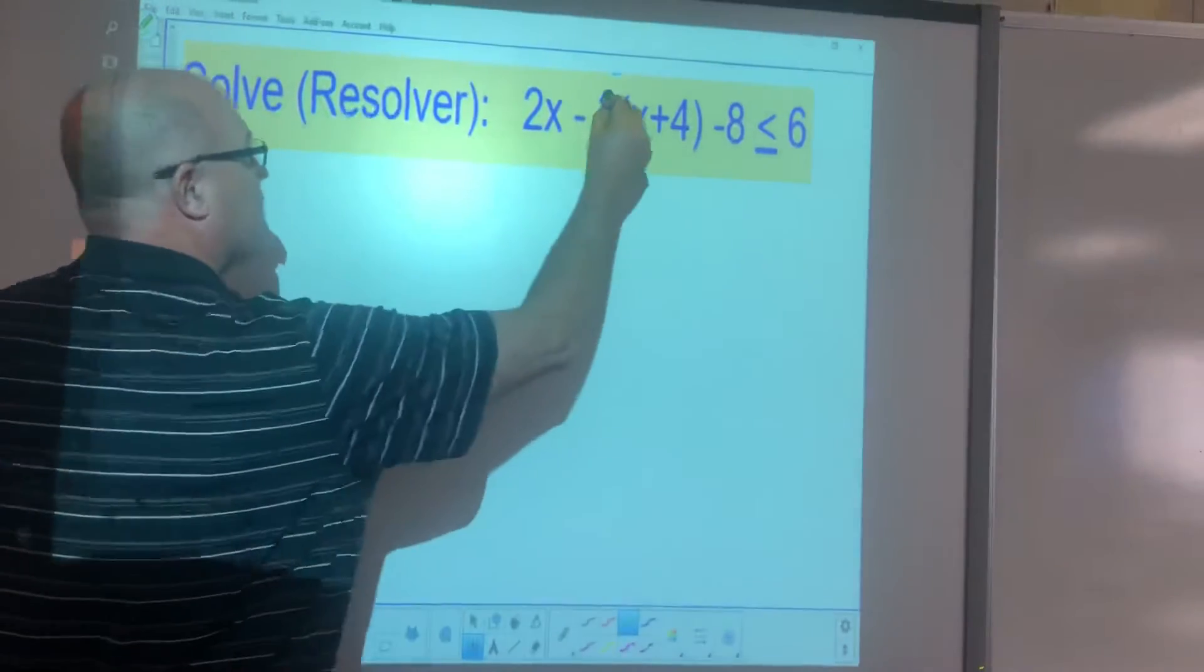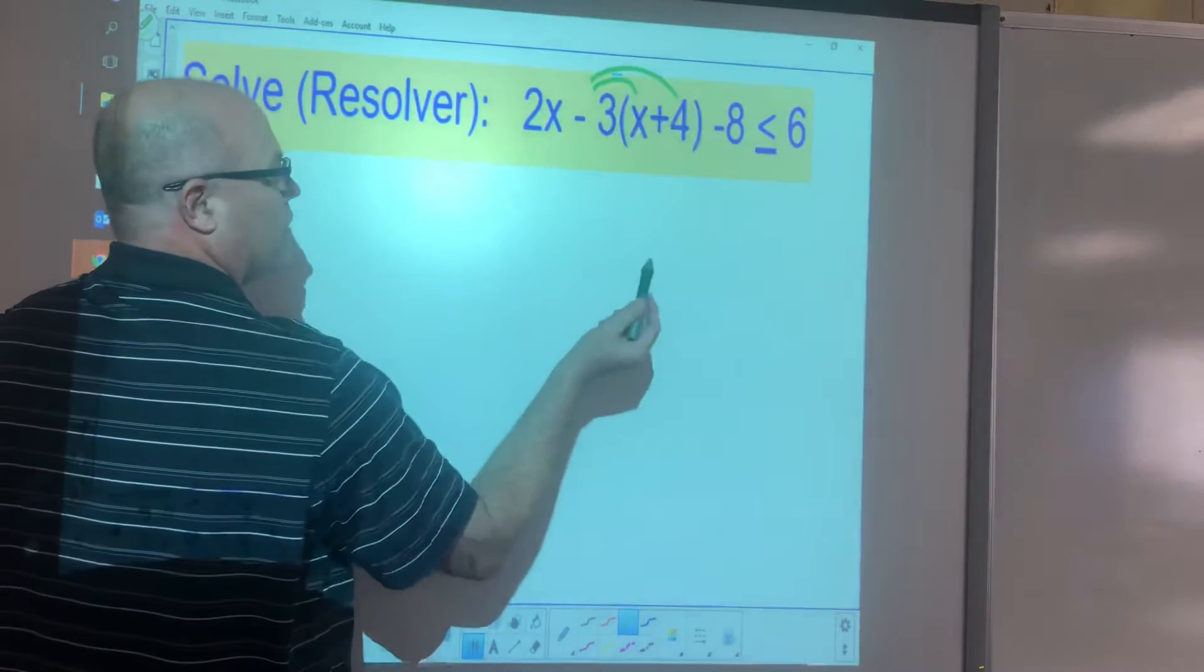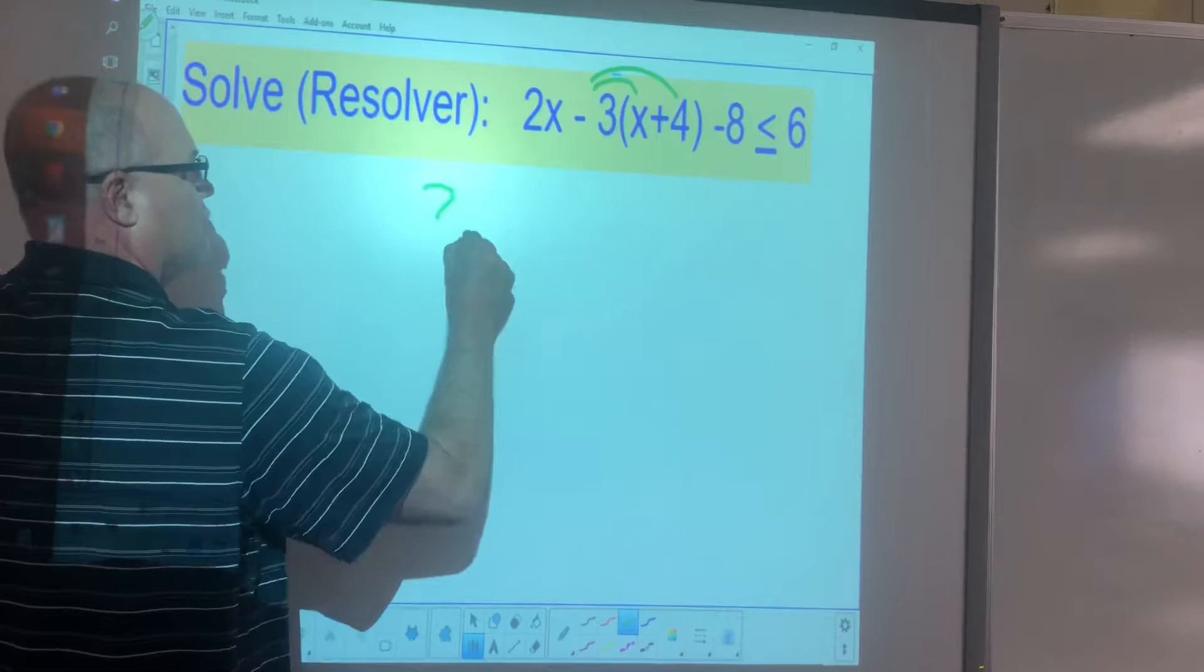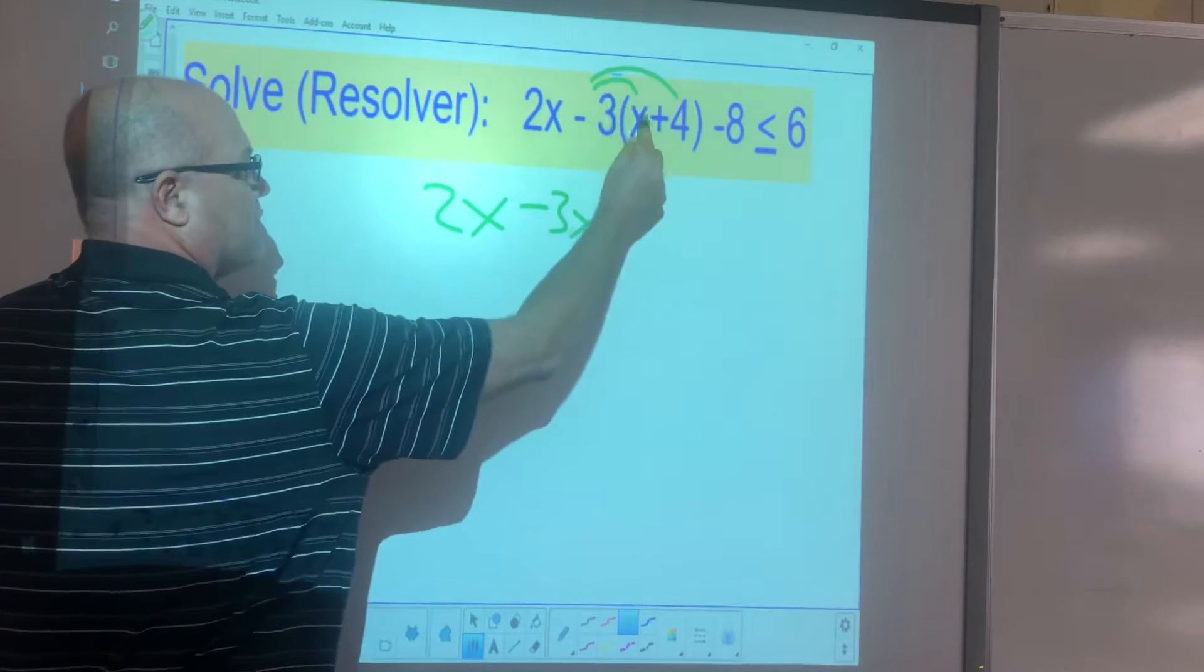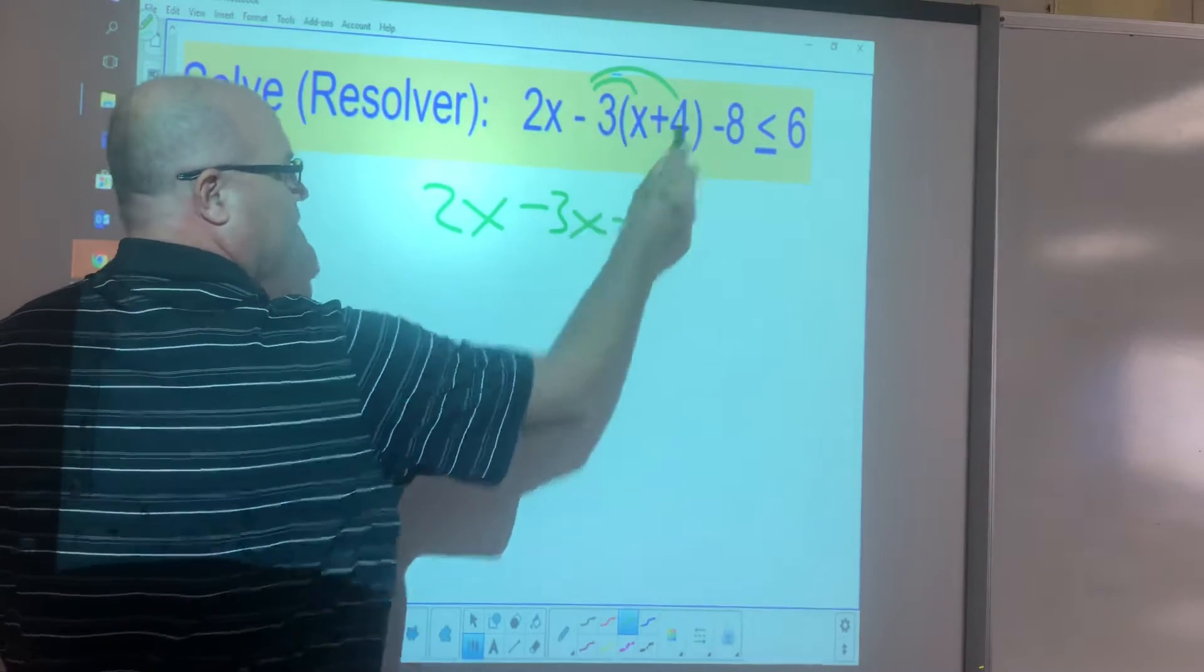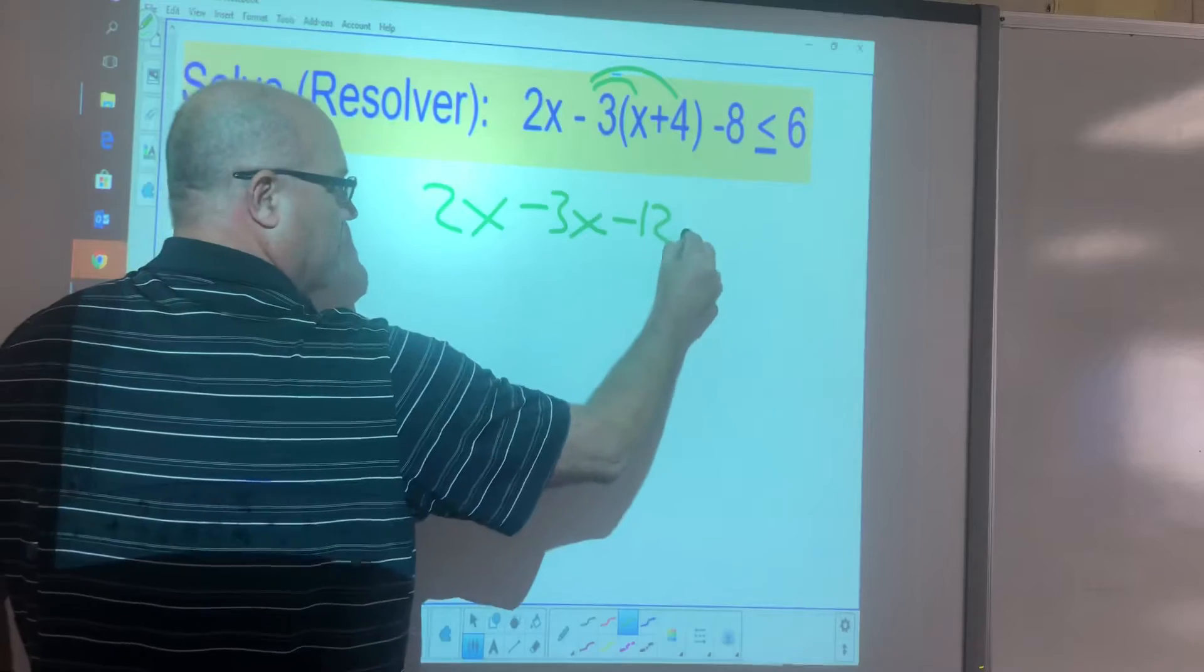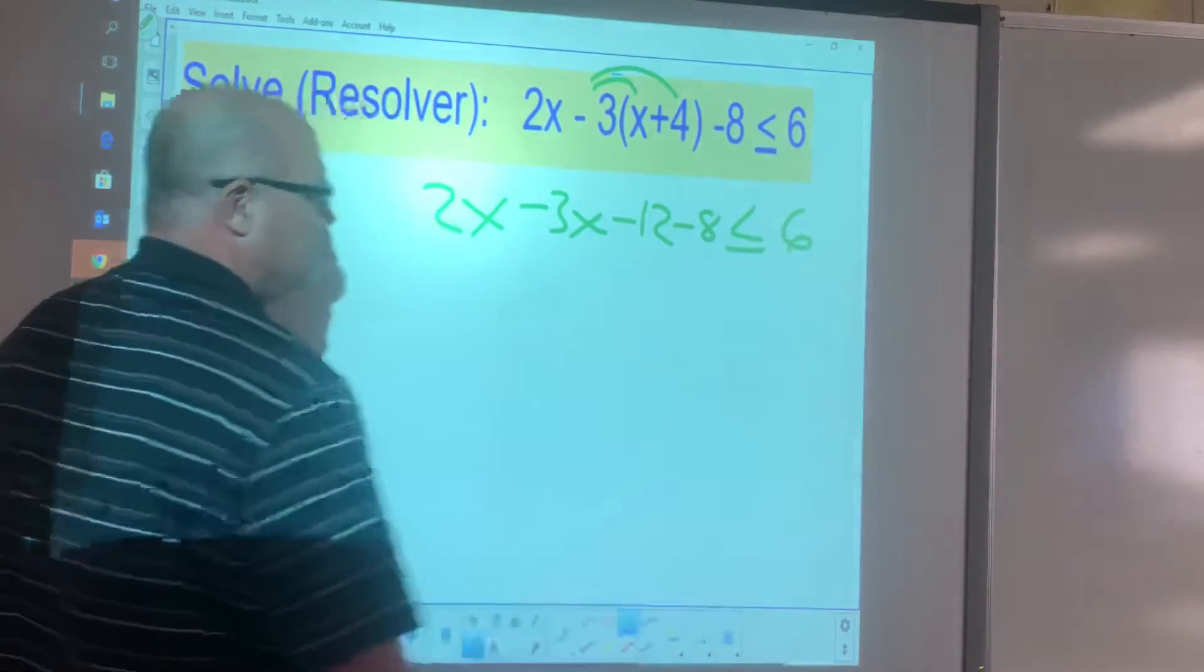So let's do that. I'm going to multiply negative 3 times x and negative 3 times 4. So I get 2x, minus 3x, that's this first multiplication, minus 12, that's negative 3 times 4, and then minus 8 is less than or equal to 6.